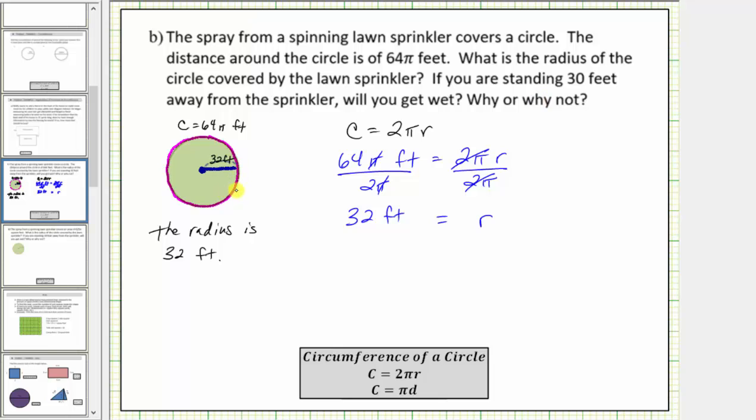So if you're thirty feet from the center of the circle where the sprinkler is, and the radius is thirty-two feet, notice how you might be here, which should be inside the circle, and therefore you would get wet.